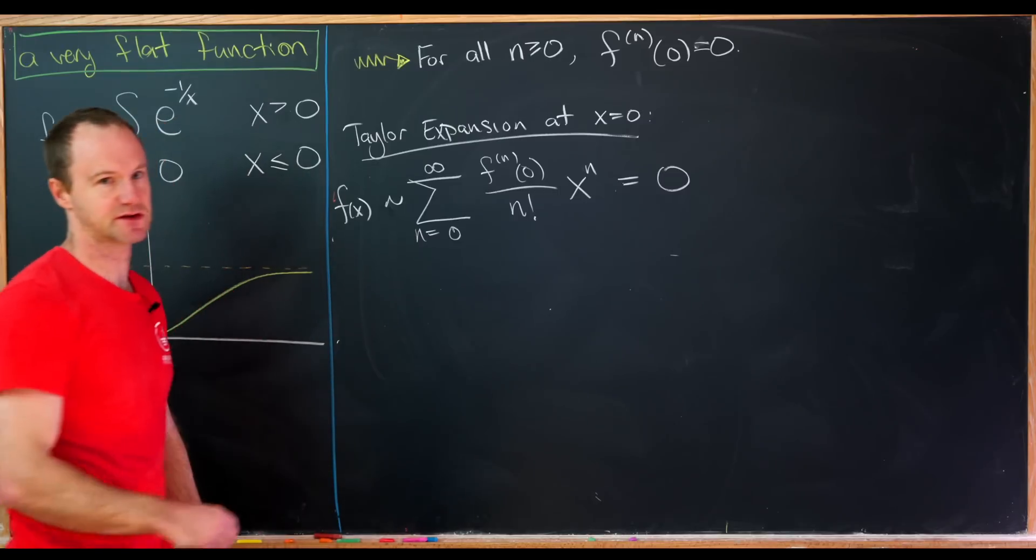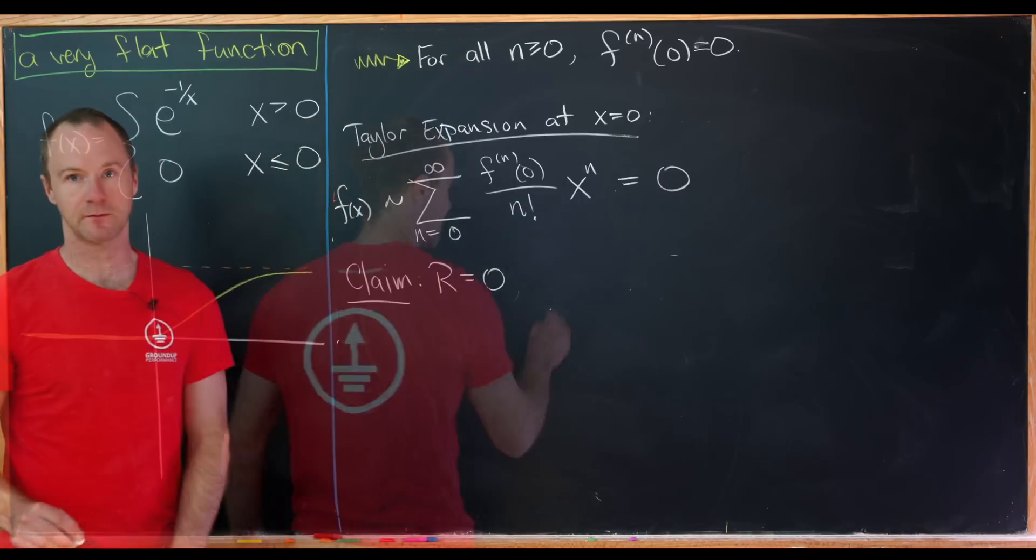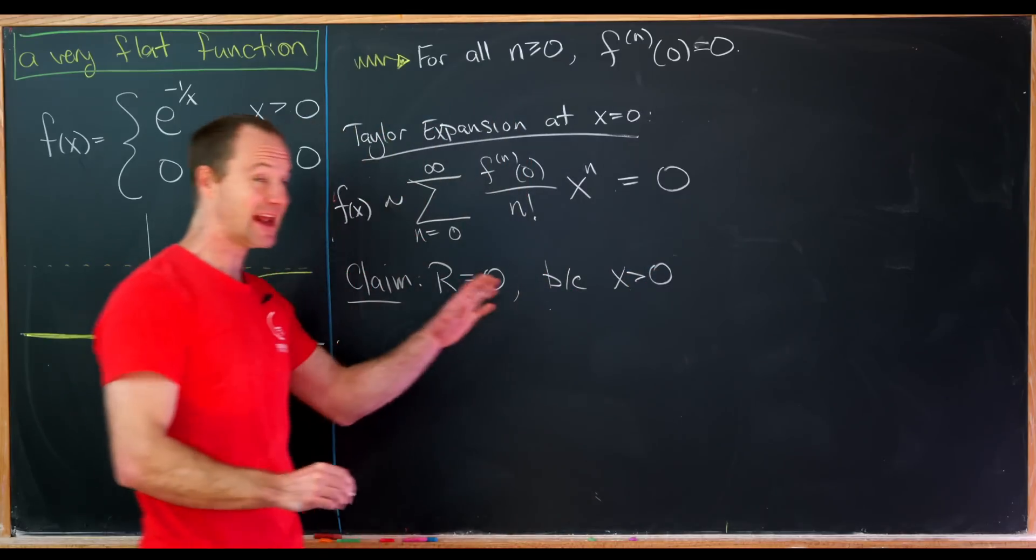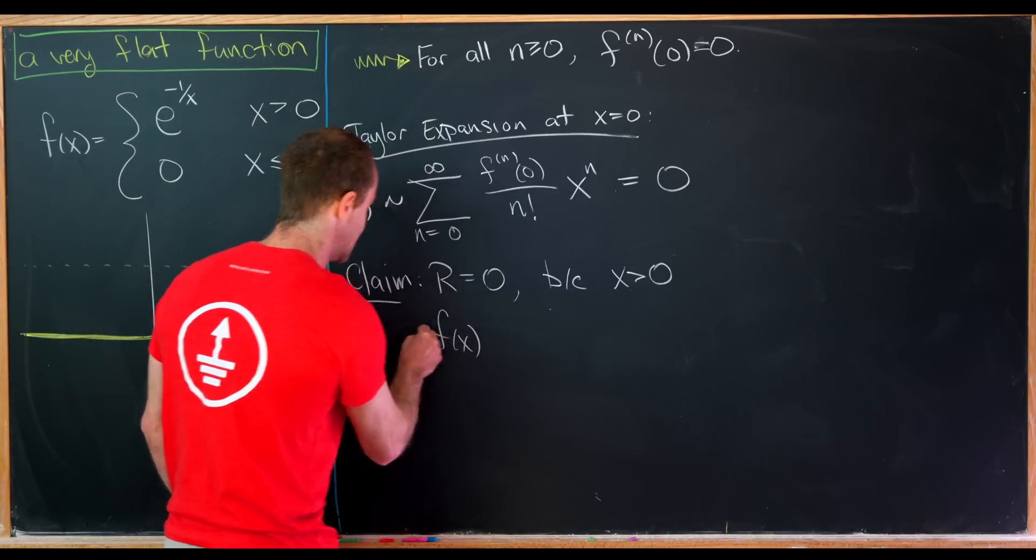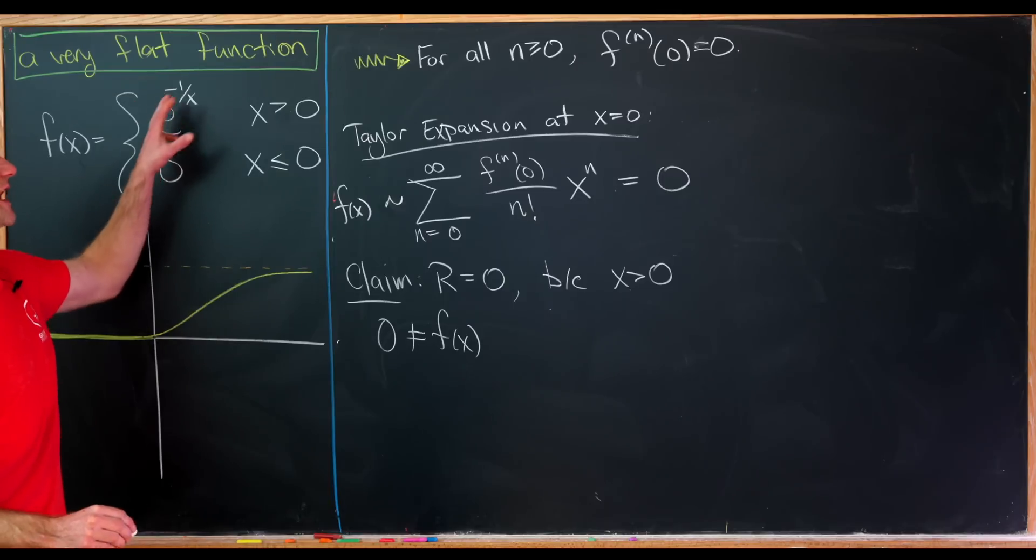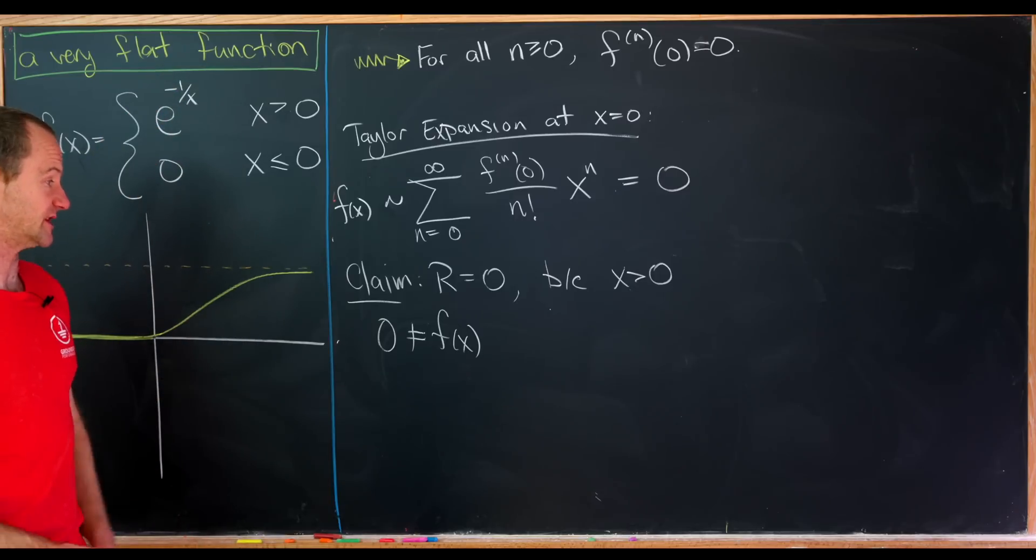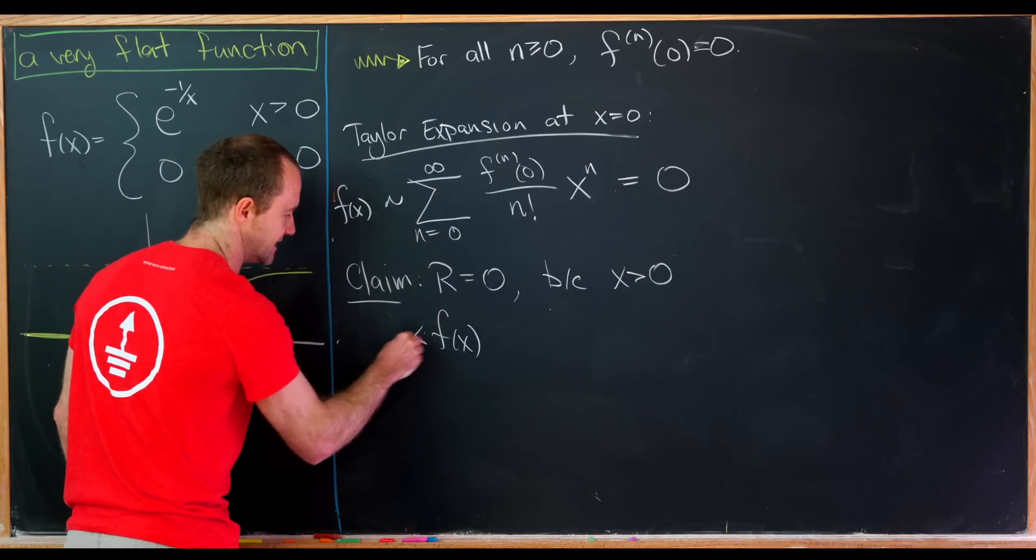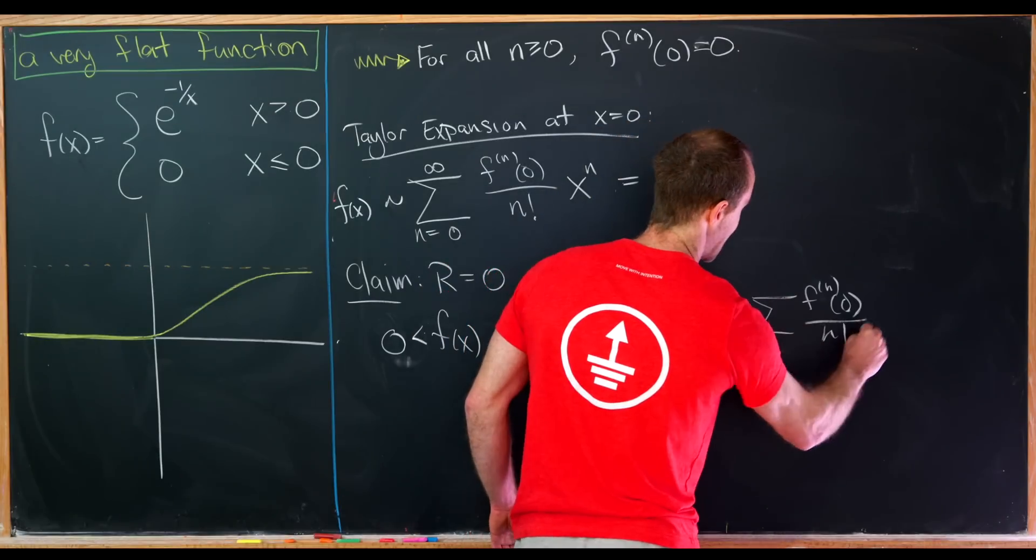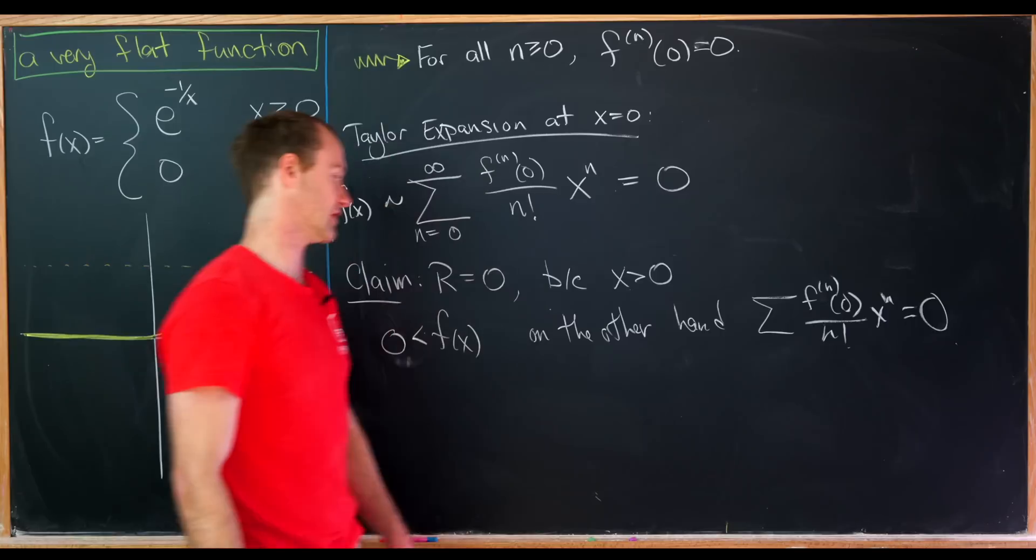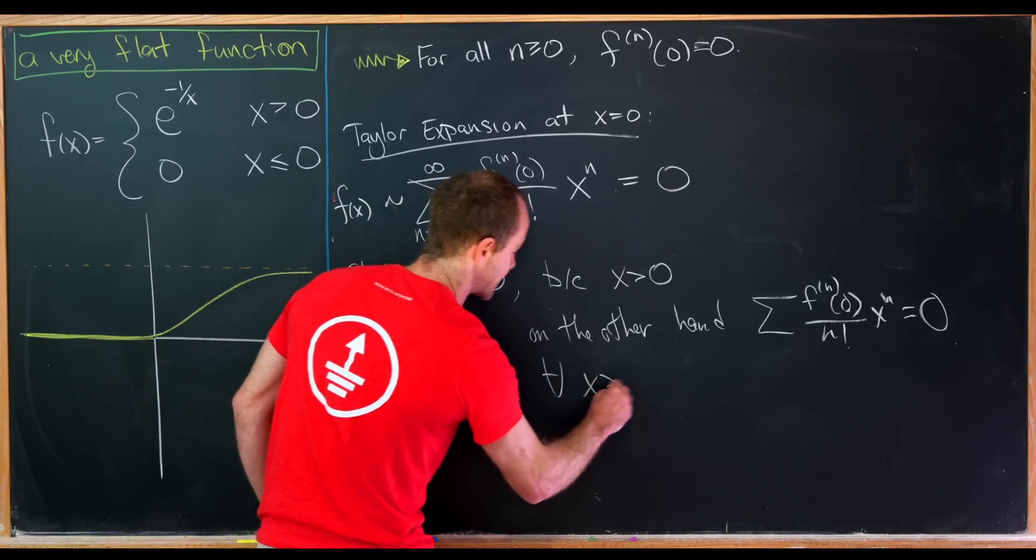But now let's talk about the radius of convergence. And I claim that the radius of convergence, which I'll call capital R, is equal to 0. And why is that? That's because if x is anything larger than 0, even if it's like just a tiny bit bigger than 0, then f of x is not equal to 0. That's because we're plugging something into an exponential function, which is like a real number. We're plugging a real number into an exponential function. But exponential functions are never 0. In fact, they're always bigger than 0. So we can say f of x is strictly bigger than 0. But on the other hand, we have the Taylor series evaluated at this x to the n is equal to 0. So we have the function is not equal to the series for all x bigger than 0, including super small x.